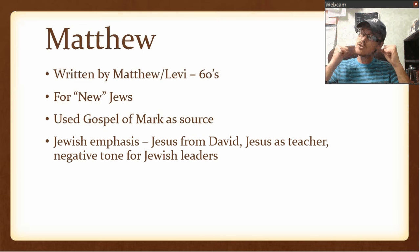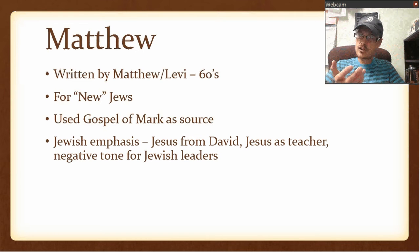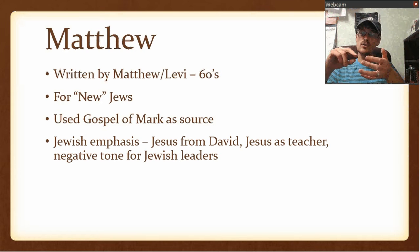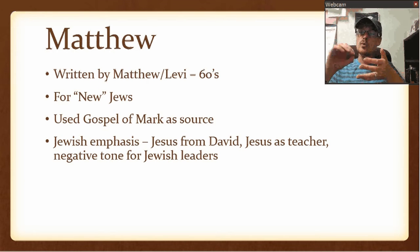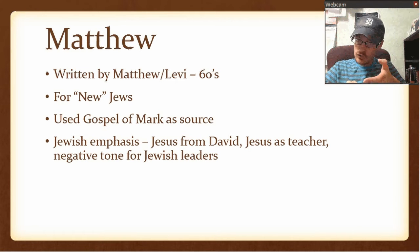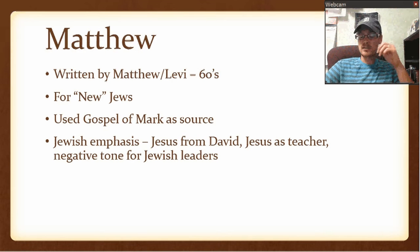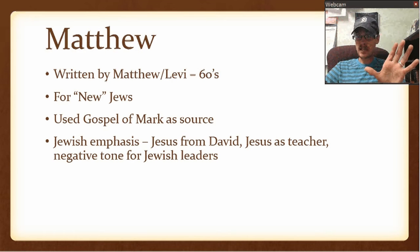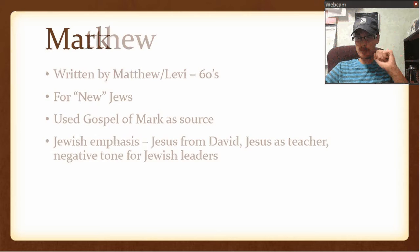Matthew also shows Jesus as coming from David. If you look at the genealogy in Matthew, it goes to Abraham, showing the way Jesus fulfilled the promise. But it gives emphasis to who is in that genealogy, and also that he did come from David — the king, the one we've been looking for, this is him. It's just a very strong Jewish feel.